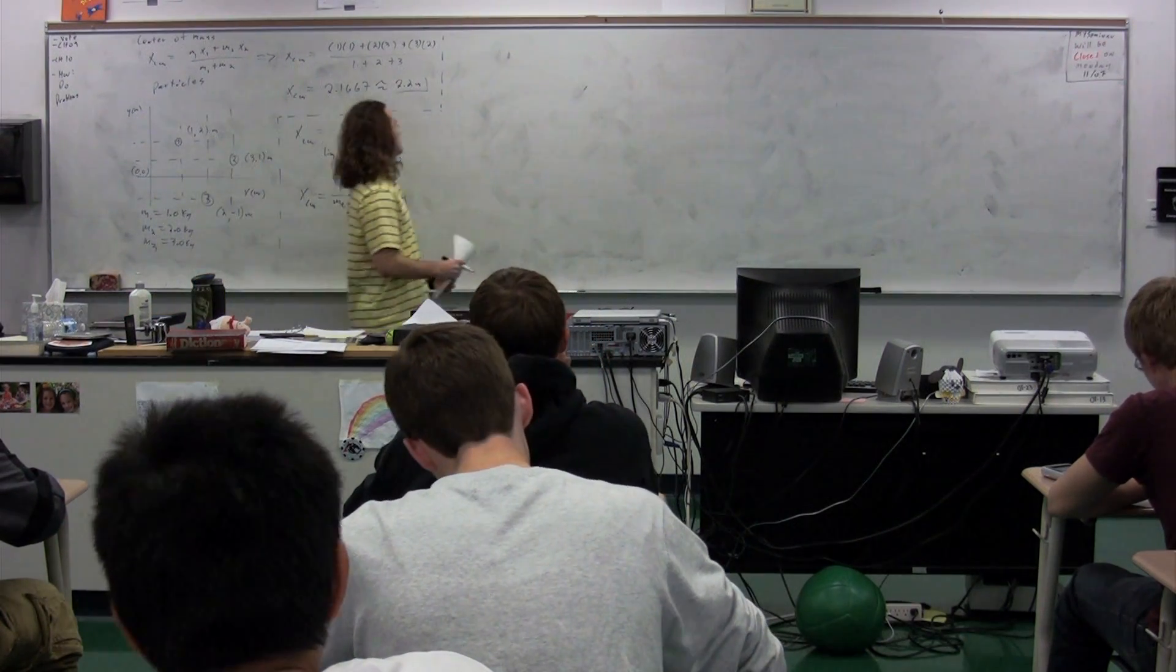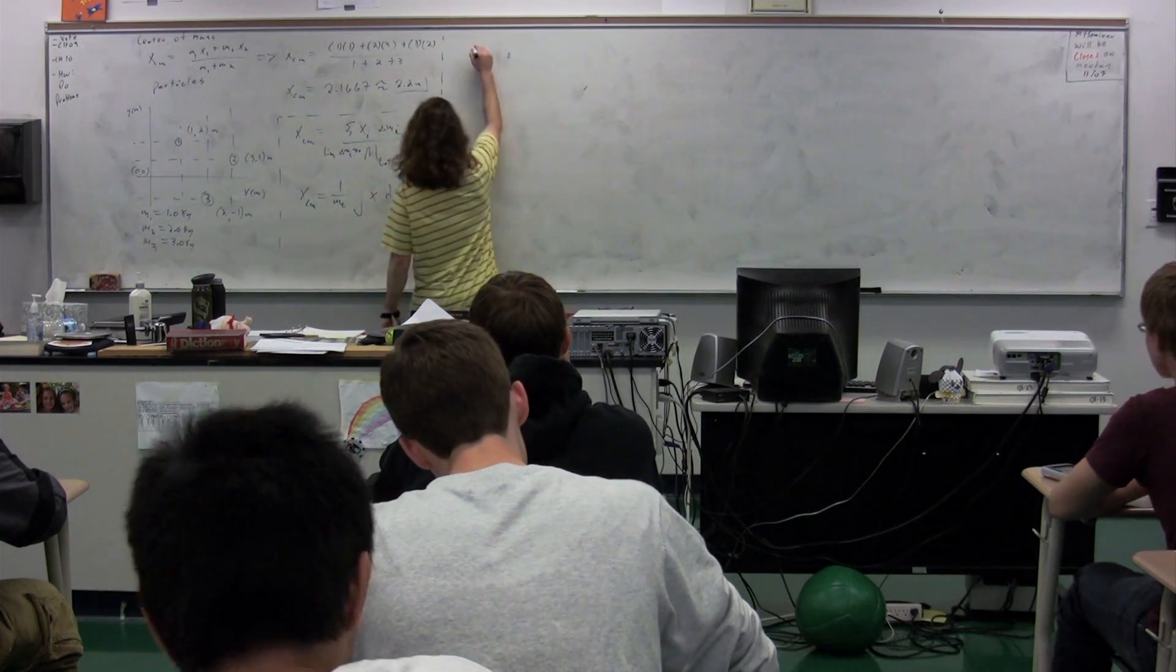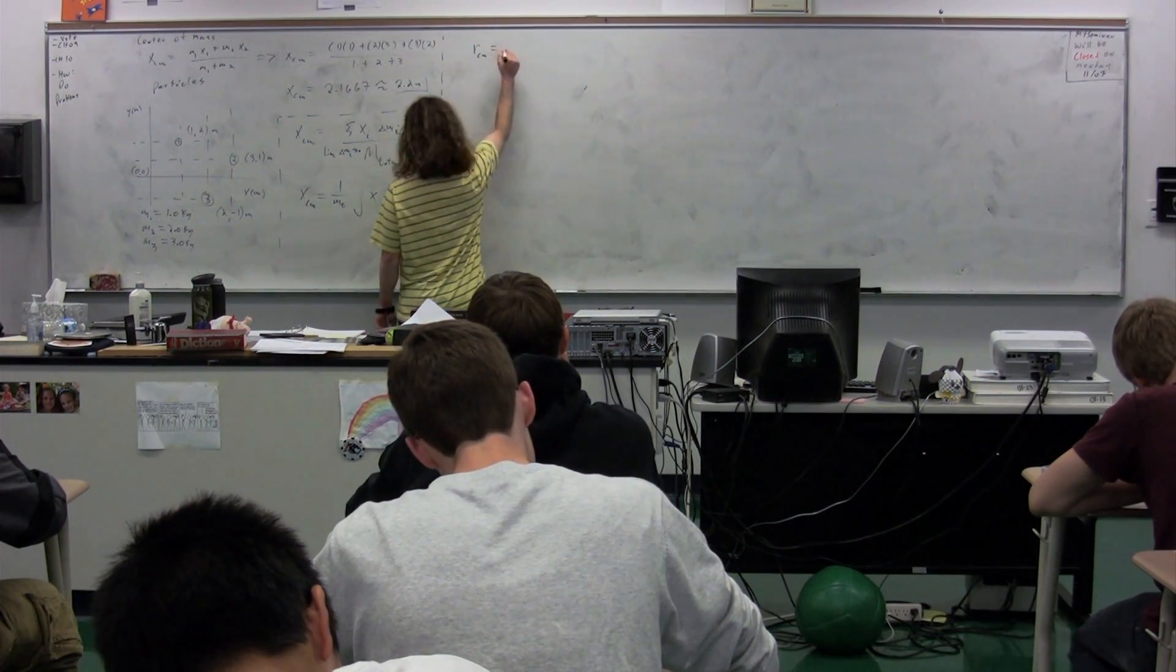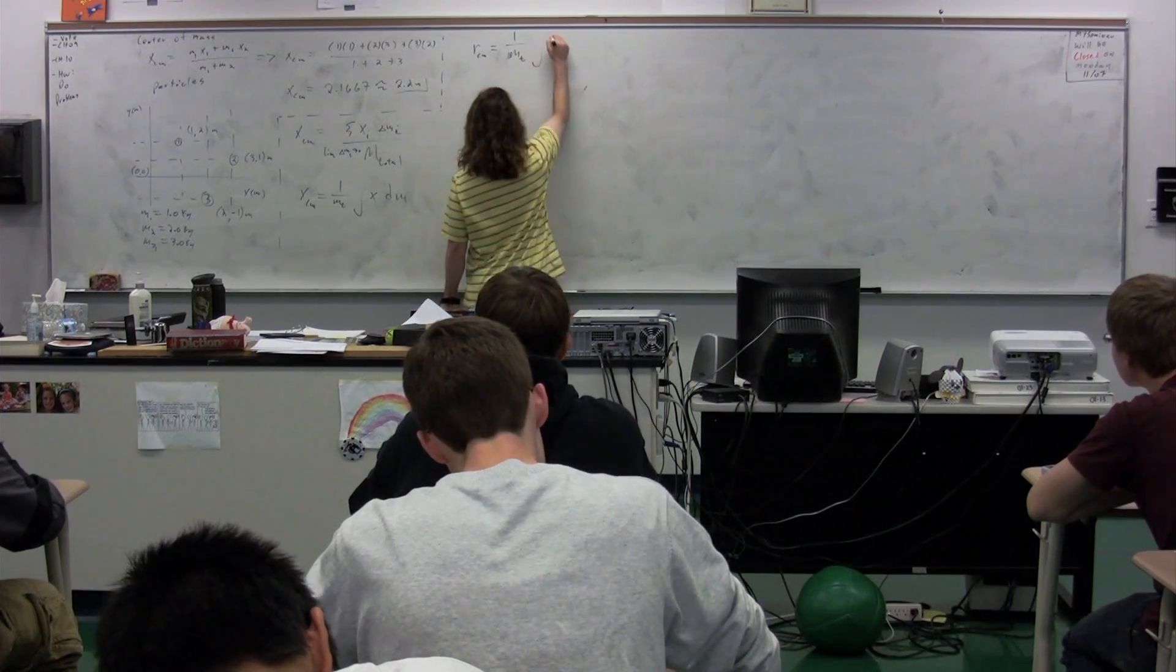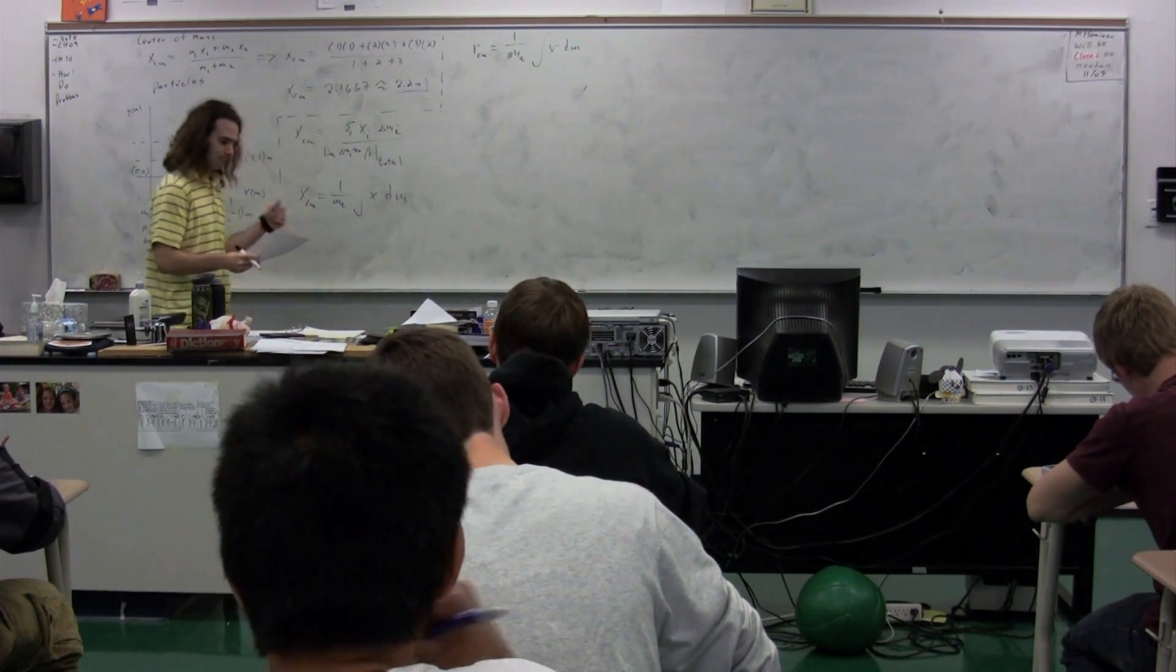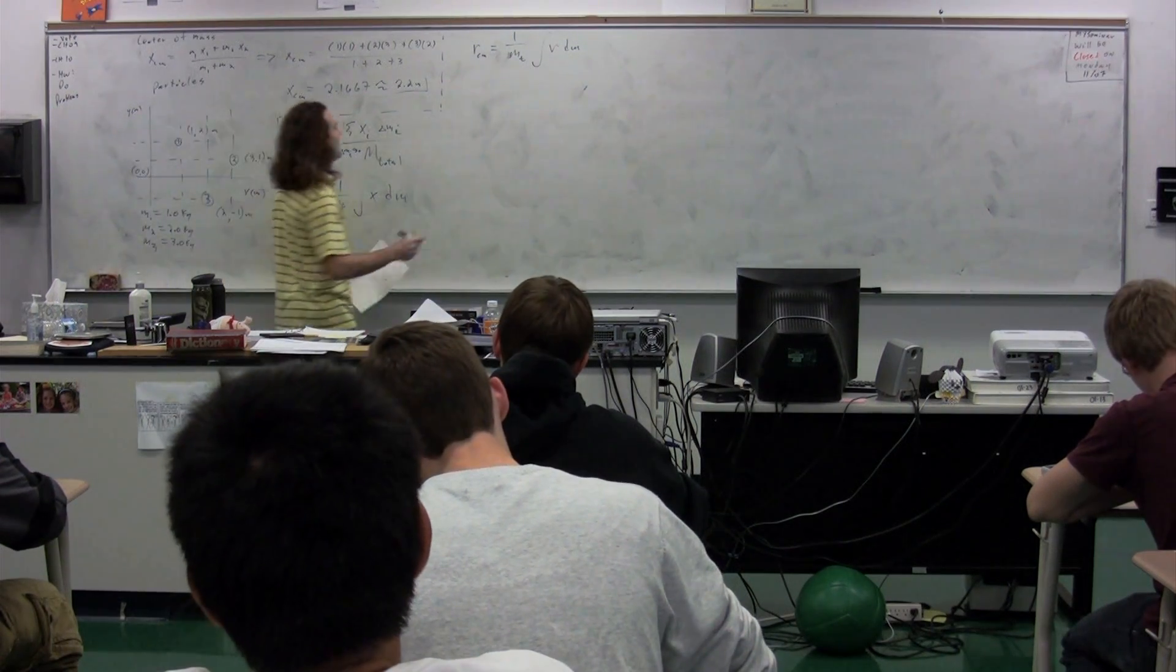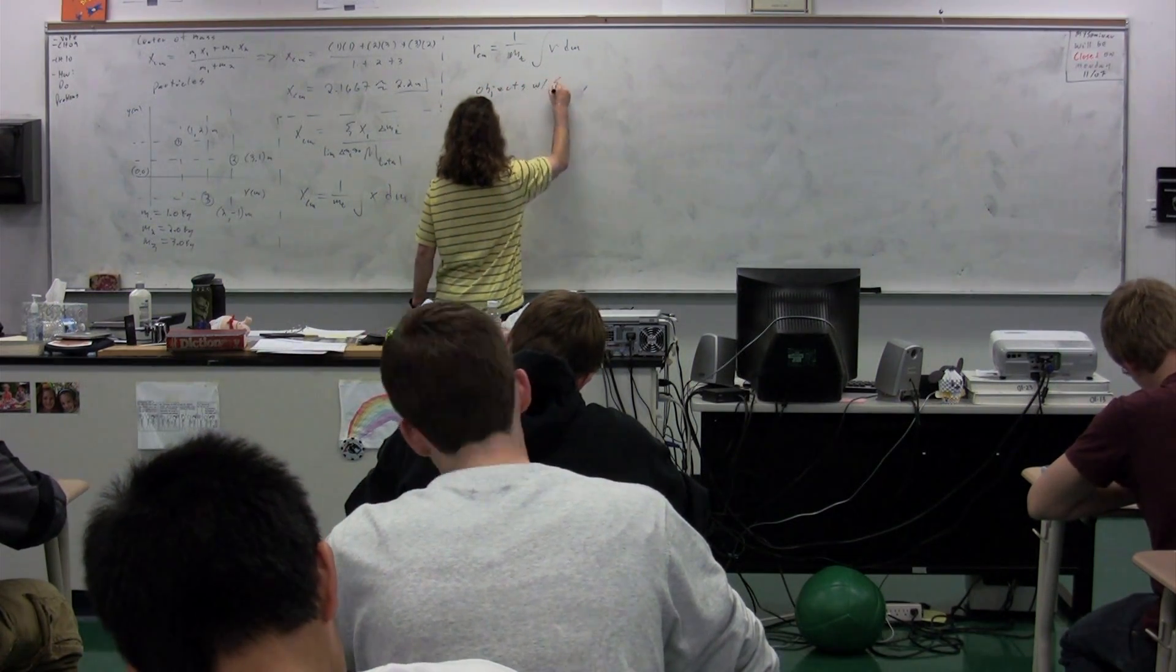The x center of mass for an object with shape is equal to one over the total mass, the integral of position with respect to mass. This is the definition of an integral. We could have the r center of mass, just as a more general one over the total mass, the integral of r dm.